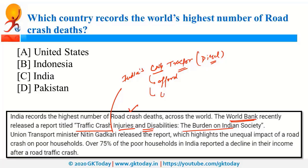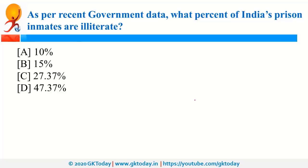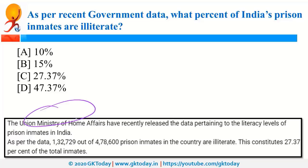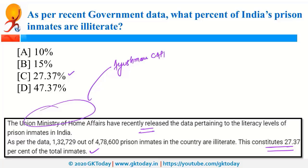As per recent government data released by MHA — Ministry of Home Affairs — 23.37% of India's total prison inmates are illiterate. MHA was also in news because of the Ayushman CAPF scheme, a healthcare scheme for Central Armed Police Forces, for which the Ministry of Home Affairs collaborated with the National Health Authority.